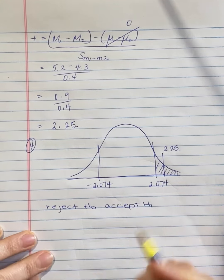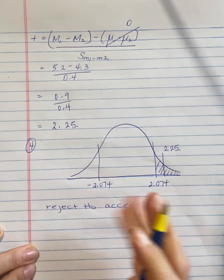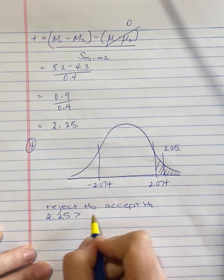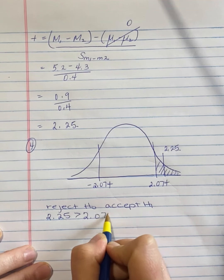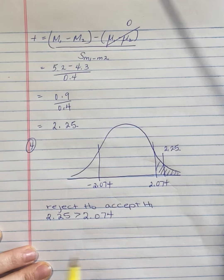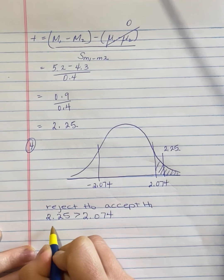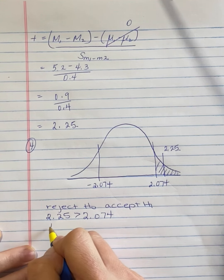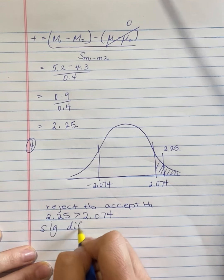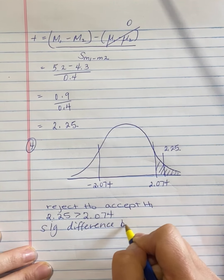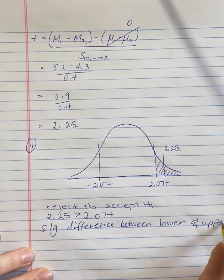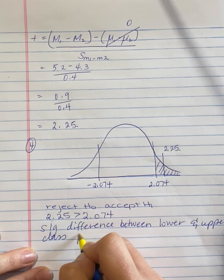I often like to show evidence. This can be evidence that you're not just guessing in the dark. 2.25 is larger, more extreme, than 2.074. And what this means is there is a significant difference between the behavior of the lower class participants and the upper class participants. A significant difference between lower and upper class participants.